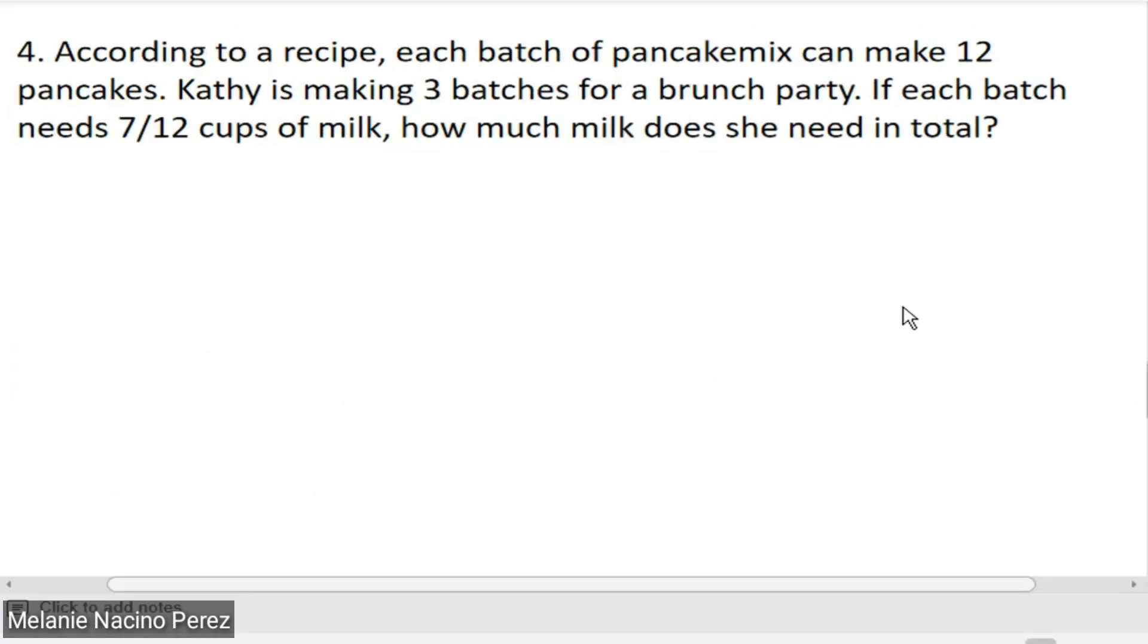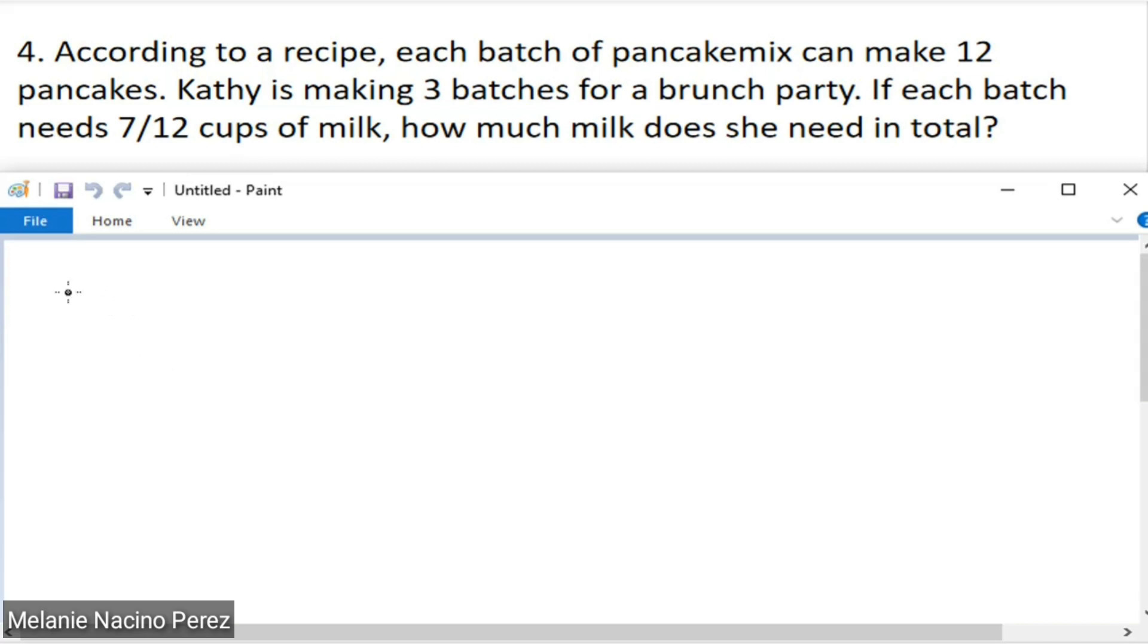The fourth problem: According to a recipe, each batch of pancake mix can make 12 pancakes. Kathy is making 3 batches for a brunch party. If each batch needs 7/12 cups of milk, how much milk does she need in total? What we're looking for in problem number 4 would be 7/12 of 3. So 7/12 cups of milk and she made 3 batches for the brunch party. What we're looking for is how much milk is needed for 3 batches.